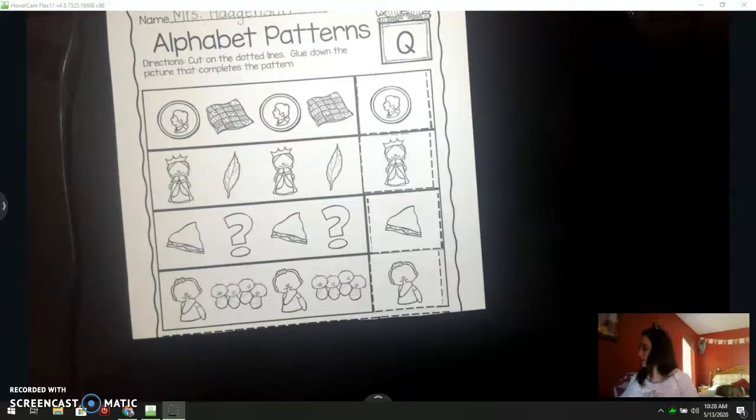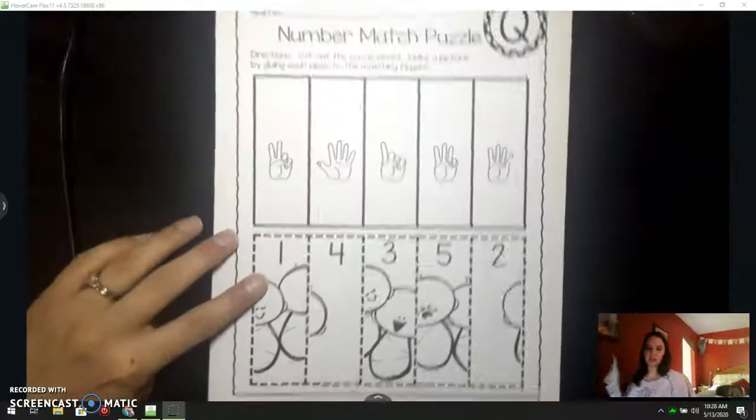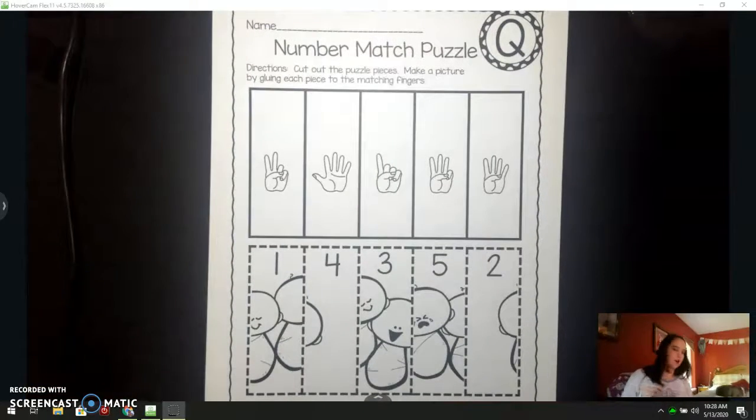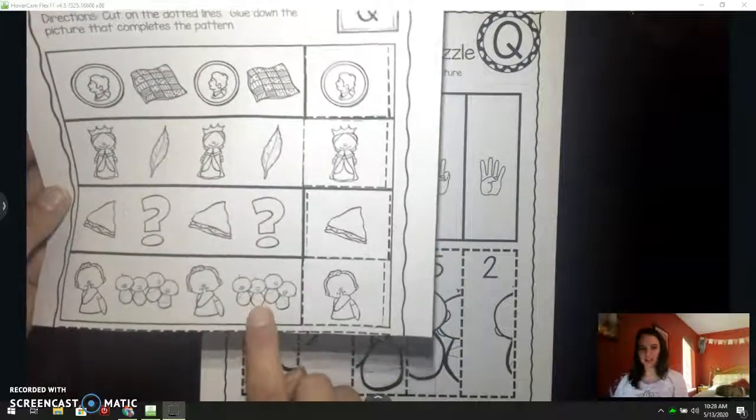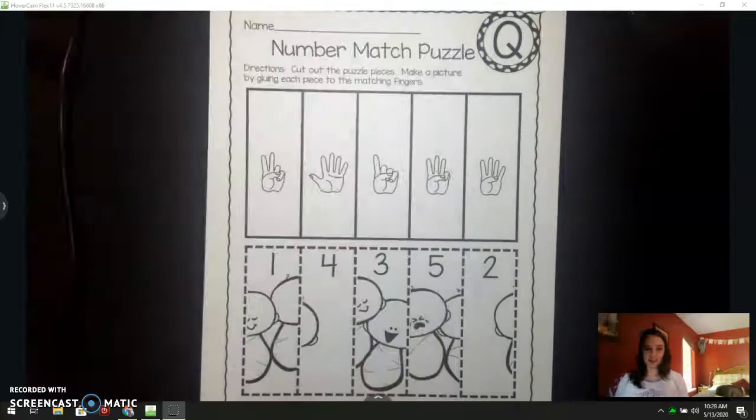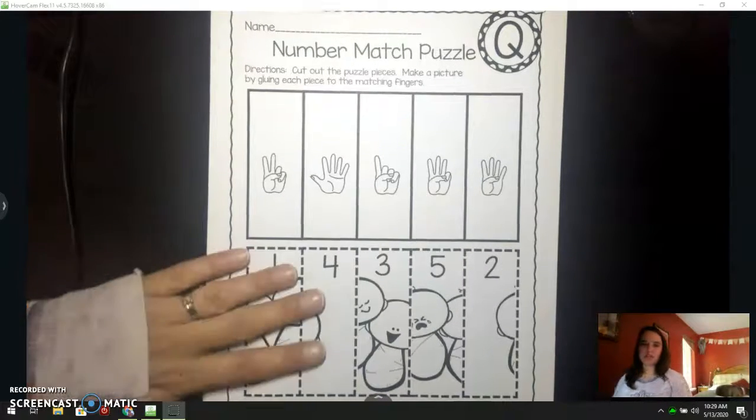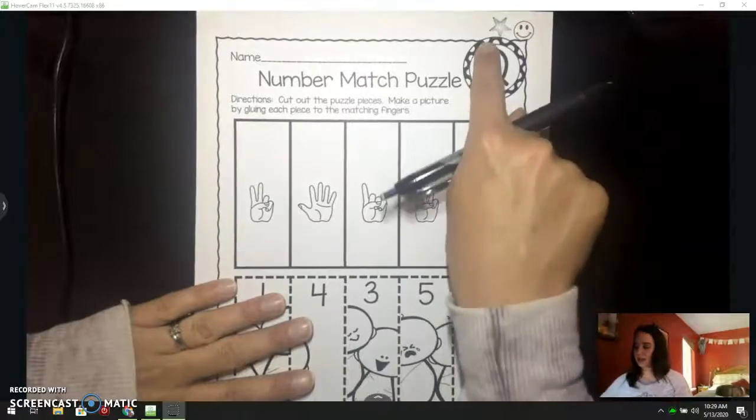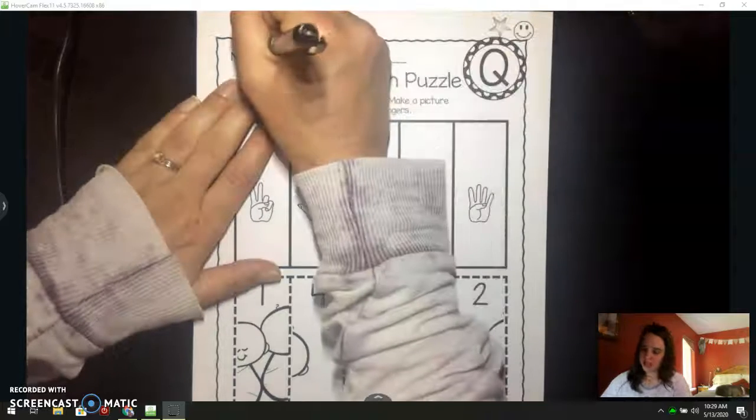We have one more cutting page for today. It's another one of our number matching puzzles. Oh, I think I know what the picture's going to be. Do you think it's going to be this? I think it's going to be the quadruplets. Let's look. But they're all mixed up. We've got to put them in order. So once you get this paper out of the back of your packet, it has a star, it's a cutting page. Go ahead and write your name on it at the top. N-A-M-E says name.